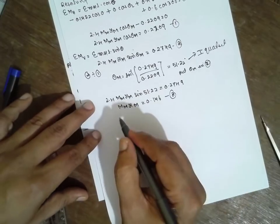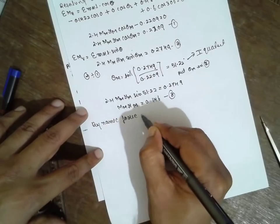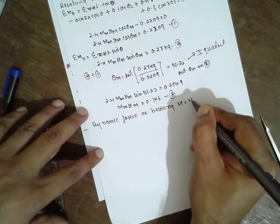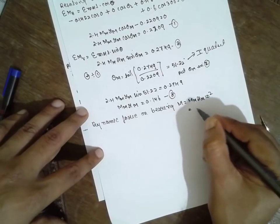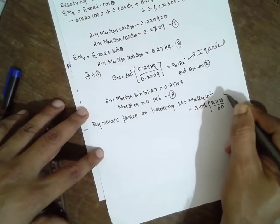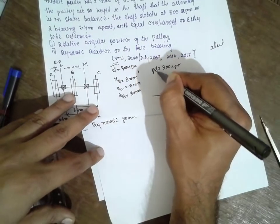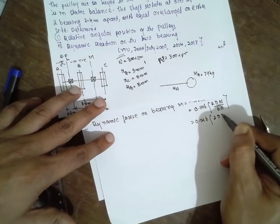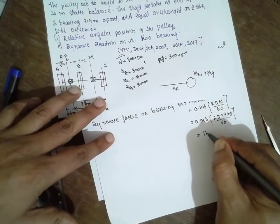As we know, the dynamic force on bearing: the formula is MM RM omega squared. Already we know this value. Put the value 0.146. Omega is 2 pi n divided by 60. The n value is already given in the problem - sorry, I have written the omega value here, it is the n value, 300 rpm. Substitute the value here: 0.146 times 2 pi times 300 divided by 60. You will get 144.09 Newtons.